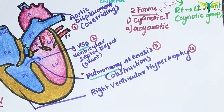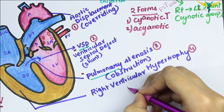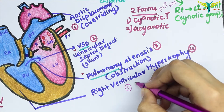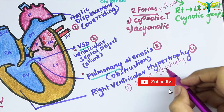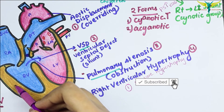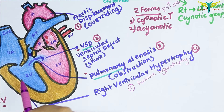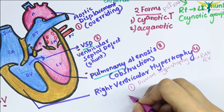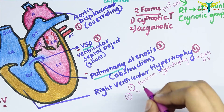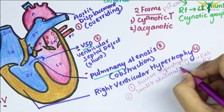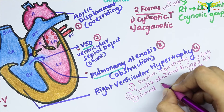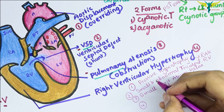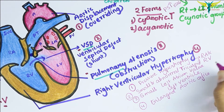The effects on the heart in cyanotic tetralogy include: pressure hypertrophy of the right atrium and right ventricle due to pulmonary stenosis, a smaller and abnormal tricuspid valve, a small left atrium and left ventricle, and an enlarged aortic orifice.